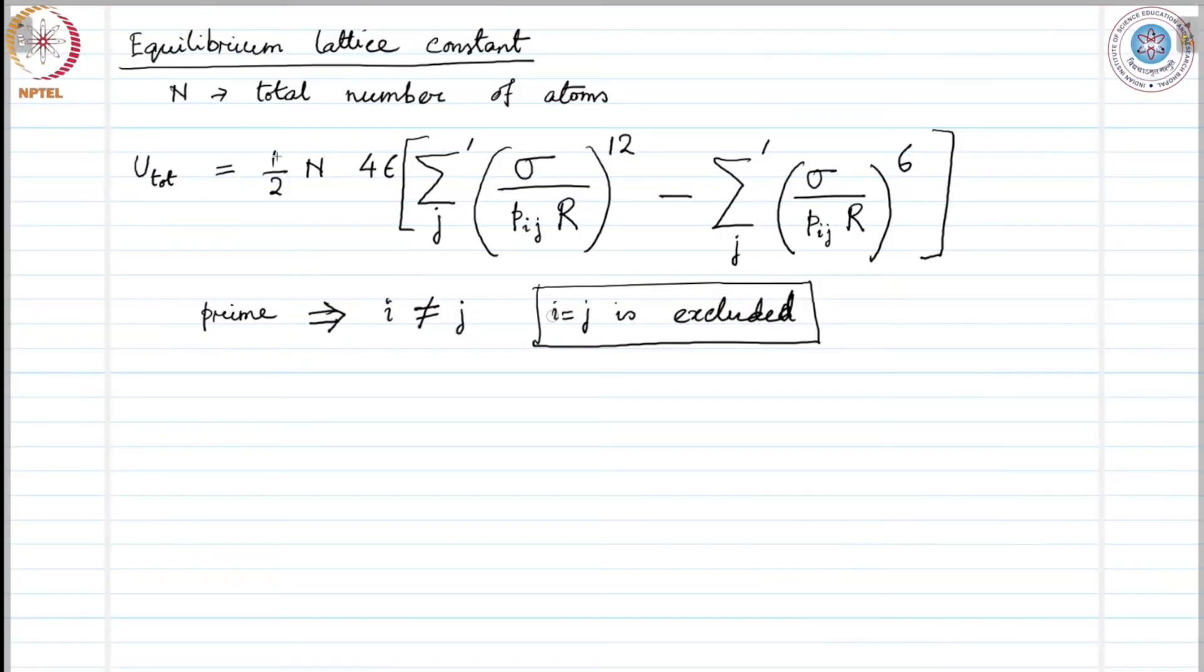Why half? Because we have double counted each interaction. We have counted the interaction twice, so we have to put a factor of half so that each interaction is counted only once.